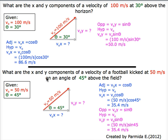Once again, we take v naught, so we're given v naught, which is 50 meters per second, and theta, which is 45 degrees. We take v naught x as v naught cos theta over here, which is 50 meters per second times cos of 45 degrees, which is equal to 35.4 meters per second.